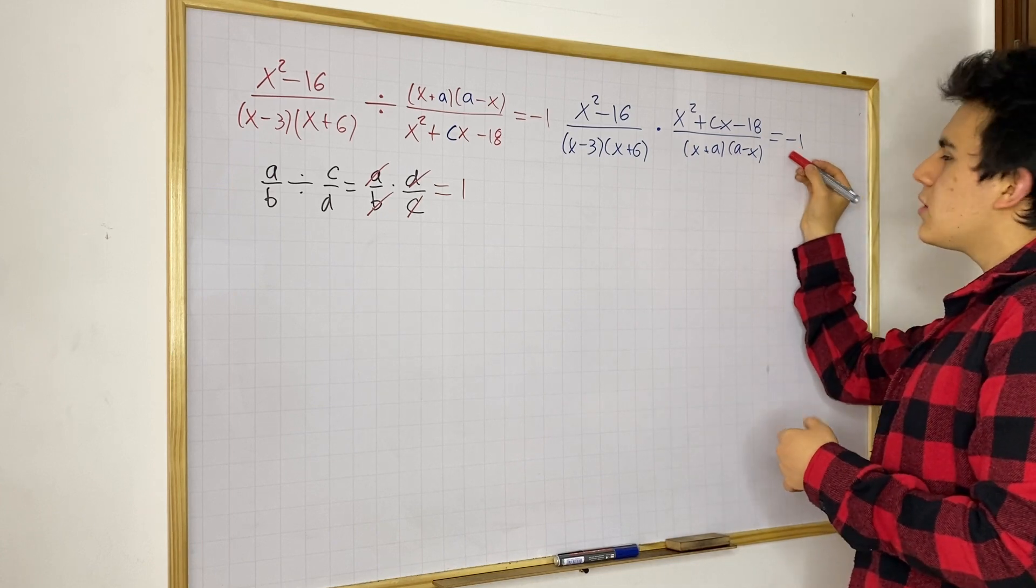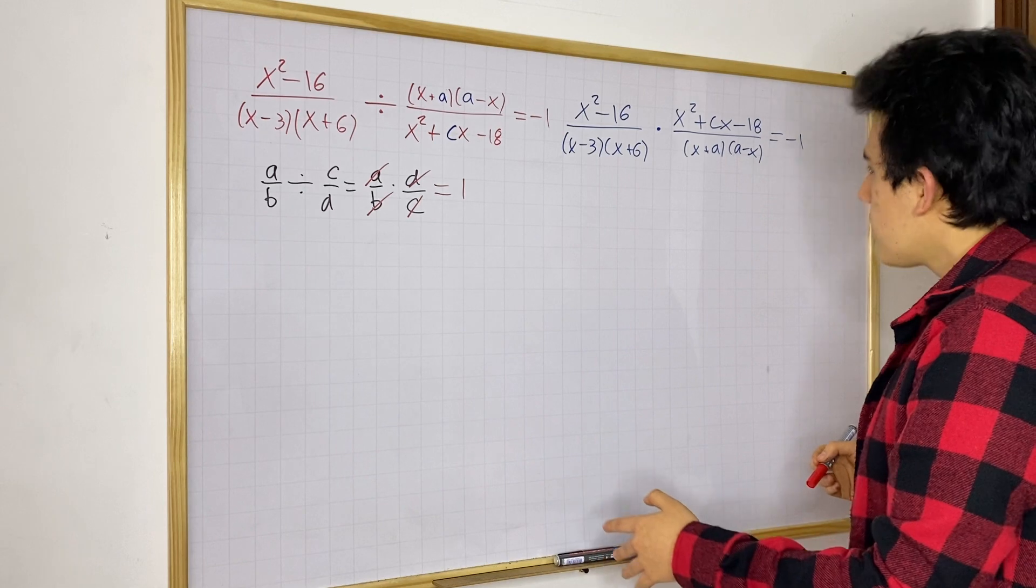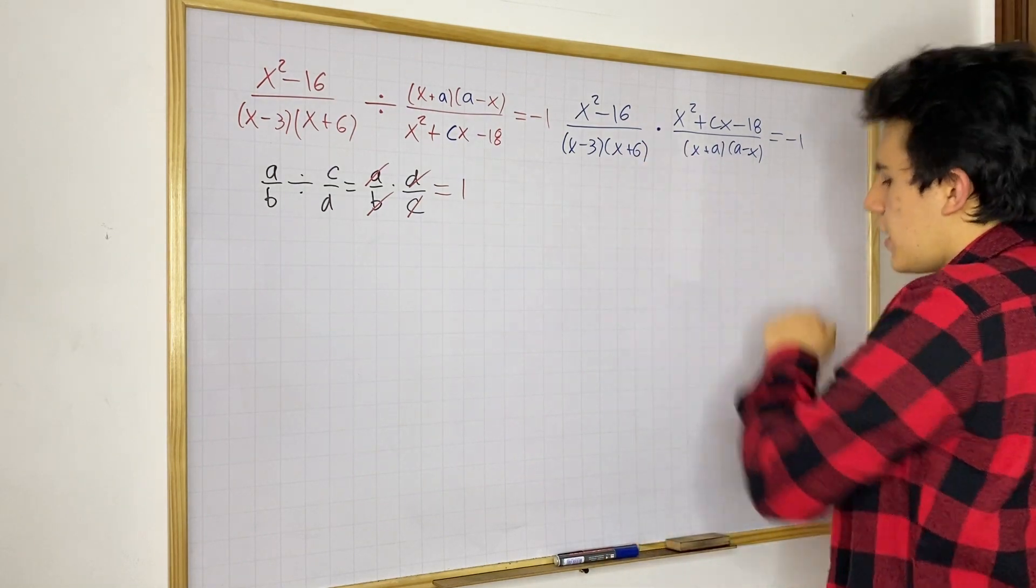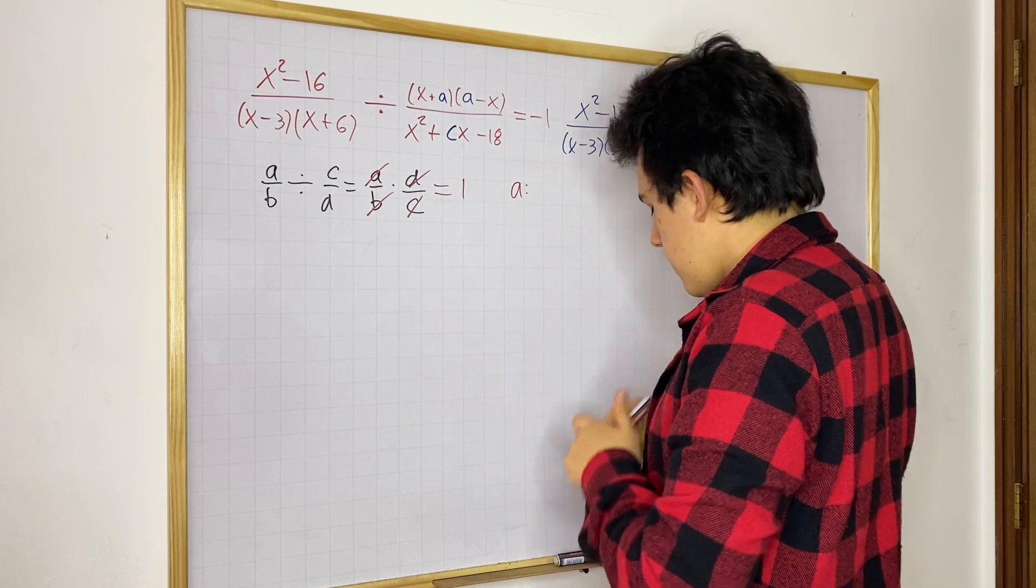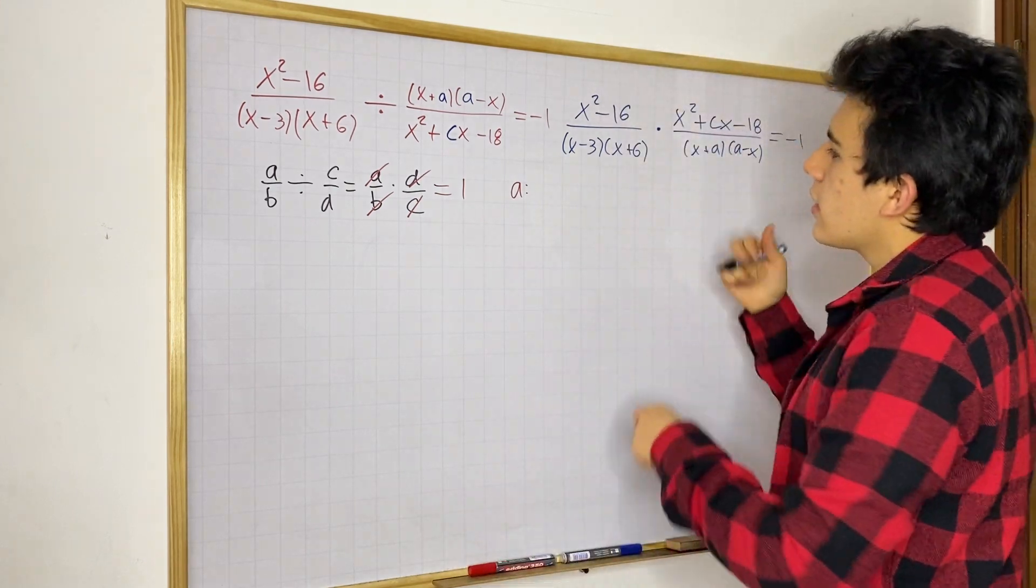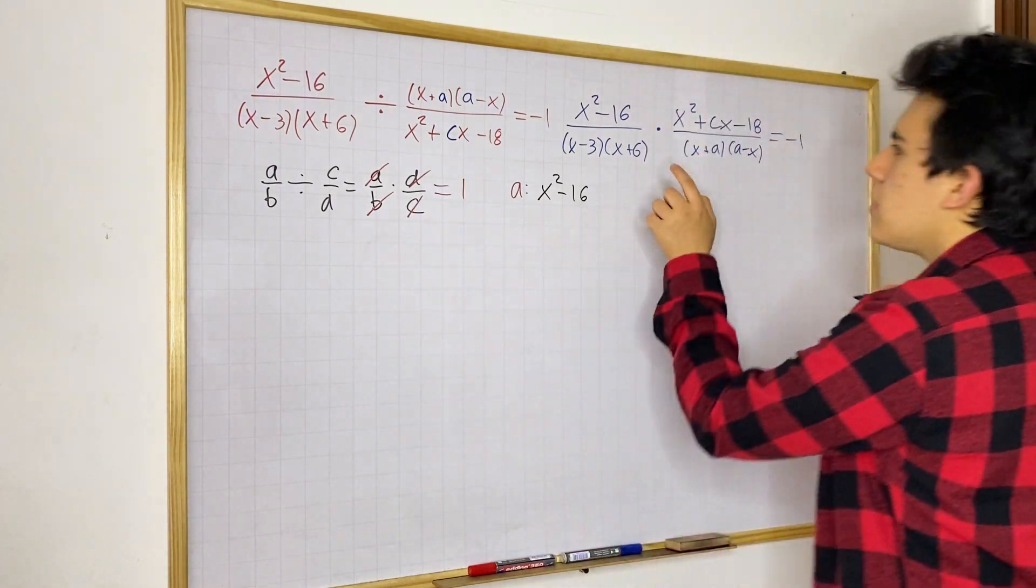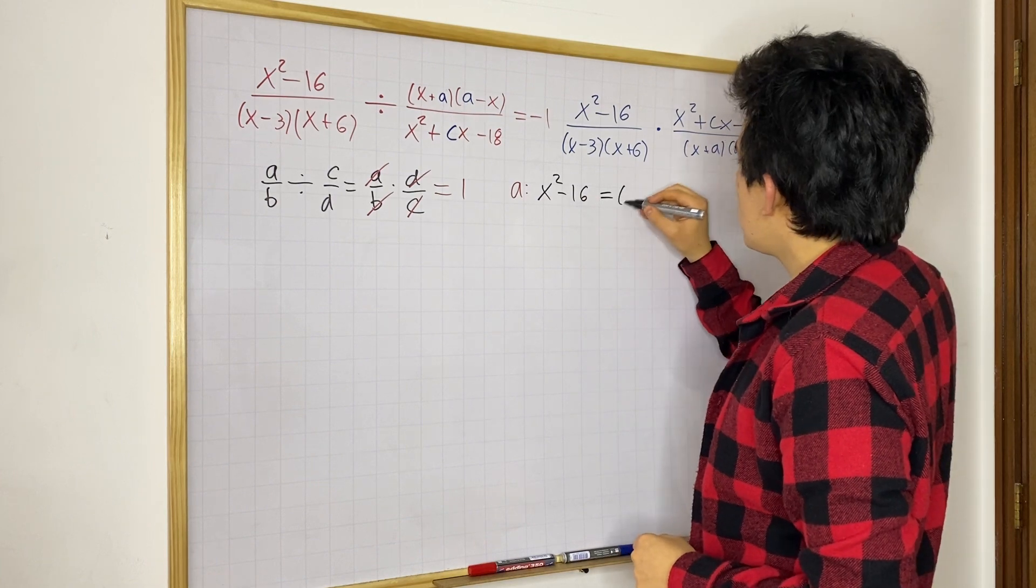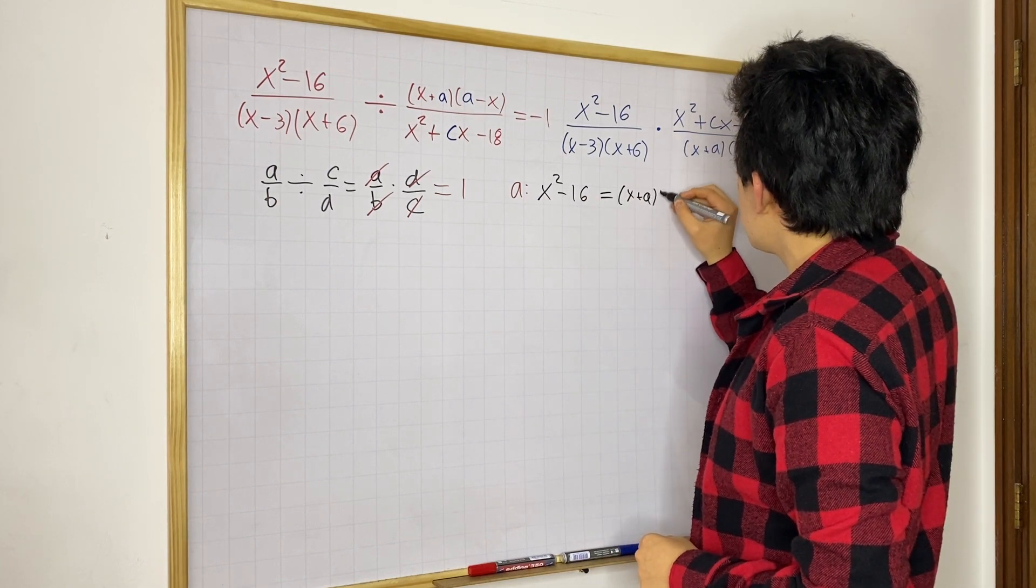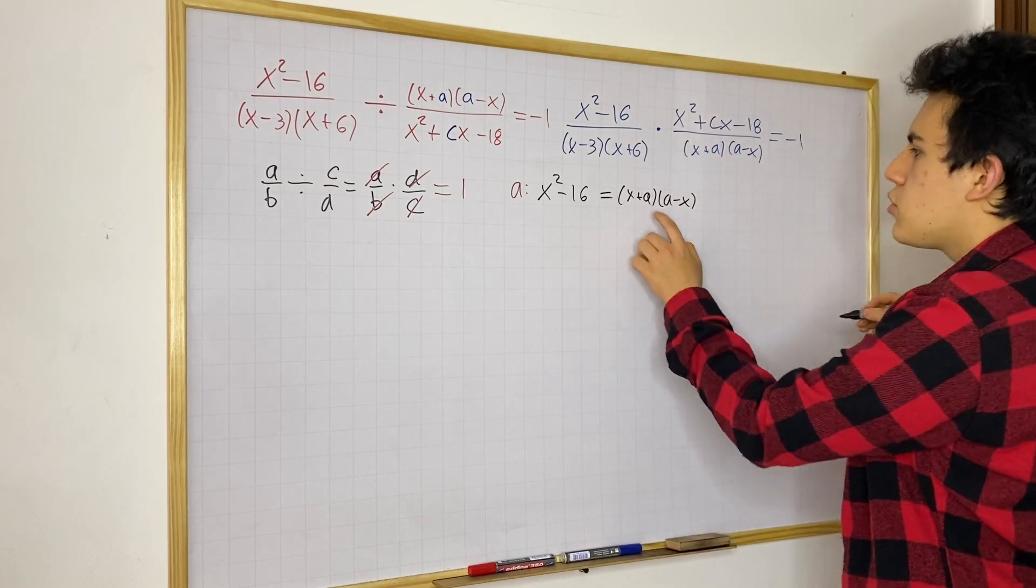And you might be wondering, well, what about this negative? You're going to see where that negative comes from. But for now, let's try to find A. So, we're going to do X squared minus 16. Since A is equal to C, that means that this is equal to these two factors. So, we have X plus A times A minus X. And now we can just simply try to find A.